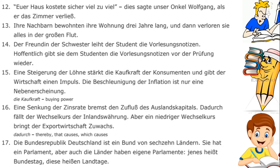A note on vocabulary: 'die Kaufkraft' is buying power — 'kaufen' is buying and 'Kraft' is power, a compound word as we've seen many times. 'Aber ein niedriger Wechselkurs bringt der Exportwirtschaft Zuwachs.' The seventeenth sentence: 'Die Bundesrepublik Deutschland ist ein Bund von 16 Ländern. Sie hat ein Parlament. Aber auch die Länder haben eigene Parlamente. Jenes heißt Bundestag, diese heißen Landtage.' Note 'jenes' and 'diese' — keep that in mind as you are translating.